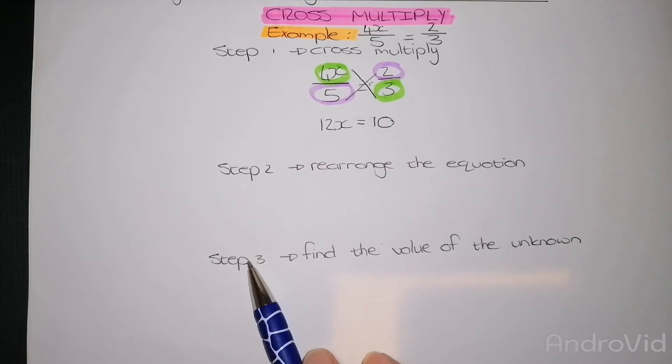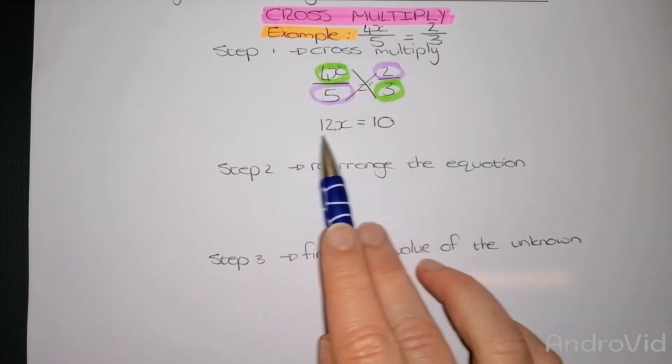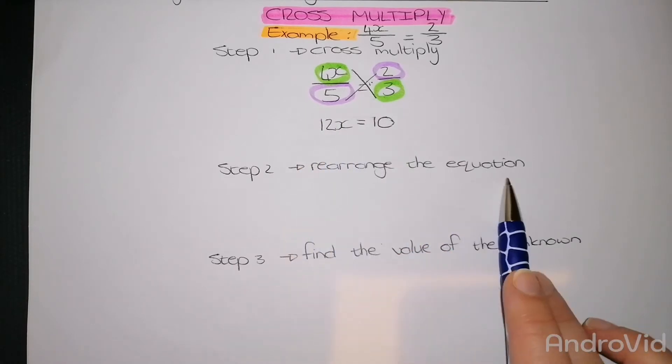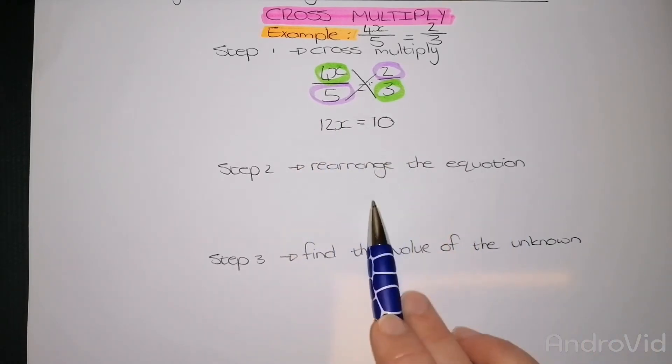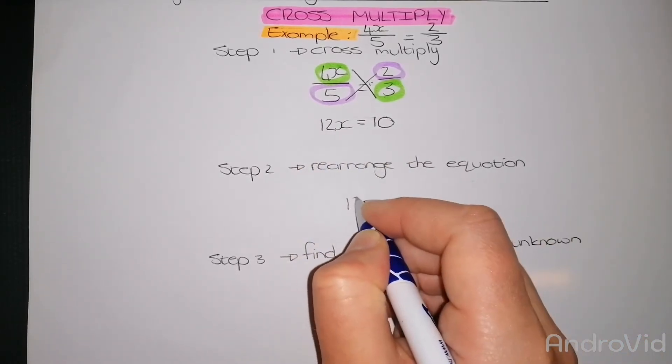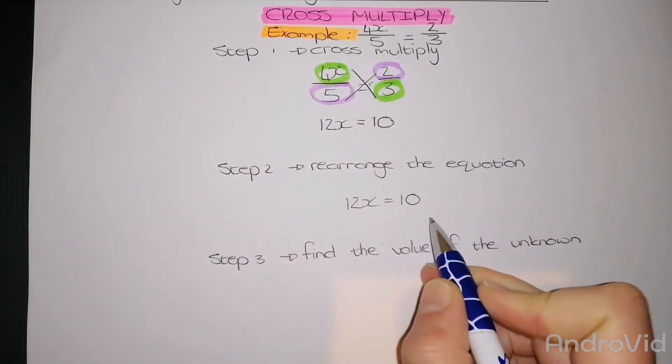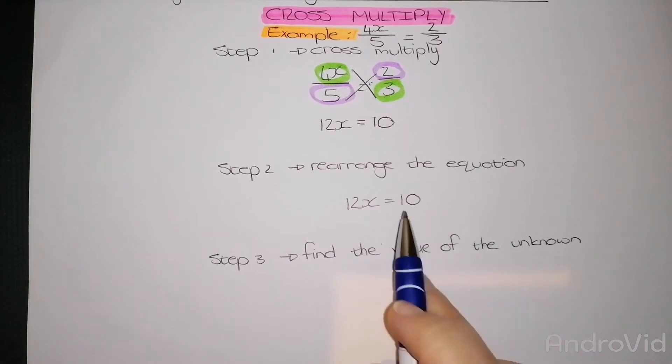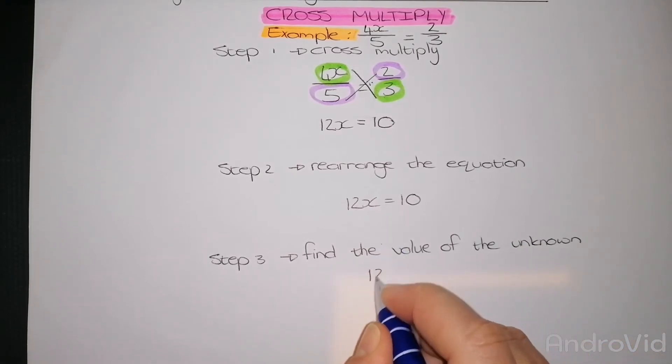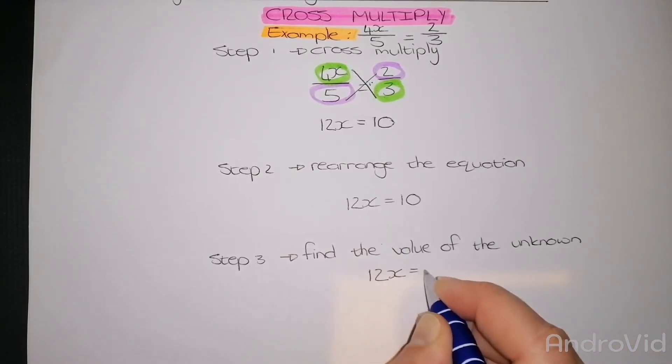Then I go on to step number 3, which is to find the value of the unknown. I'm going to rewrite my rearranged equation, which in this case I don't need. I don't need to do step number 2 because it's already done. So I need to find the value of x. Let's have 12x equals 10.